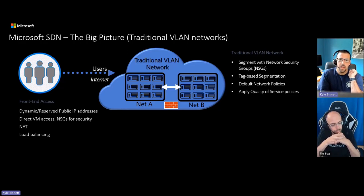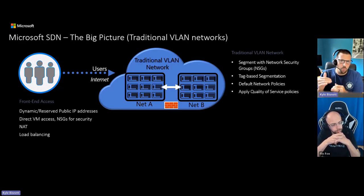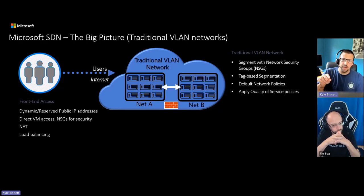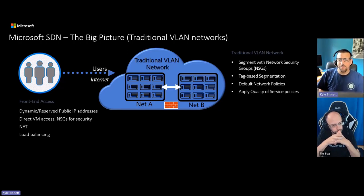You can also do tag-based segmentation. For a customer scenario - say you have a more junior admin who may not understand all your network constructs and you need to give them an easy way to associate an NSG with a SQL VM. You can put tags on your network rule or NSG, then a tag on your virtual network adapter, and that creates the connection so your SQL VM gets the right SQL network security group. This is very much like application security tags inside Azure - it's essentially what we've ported over.